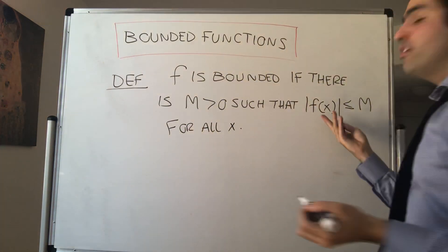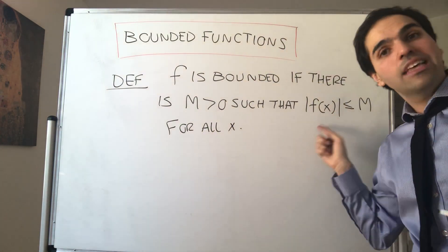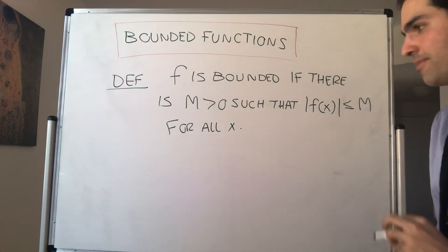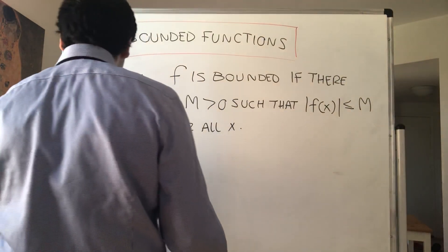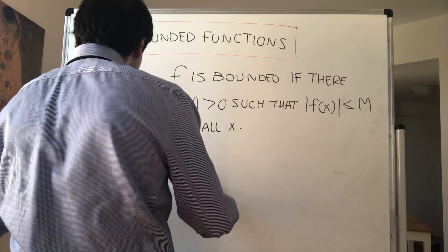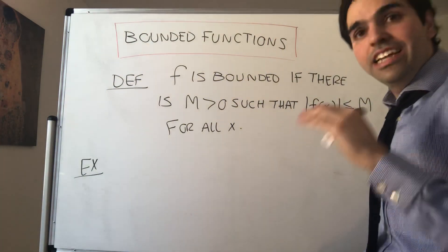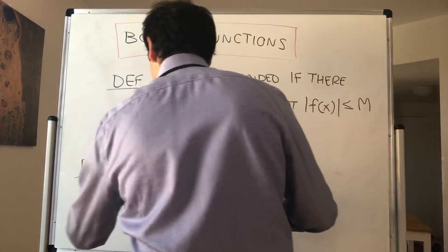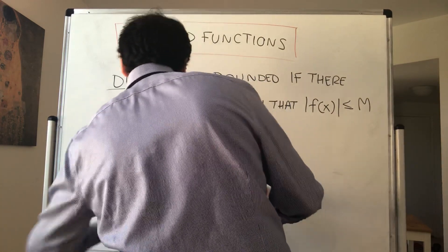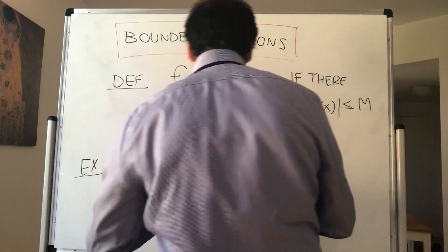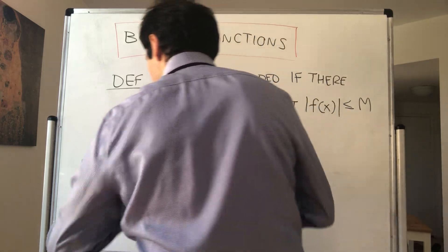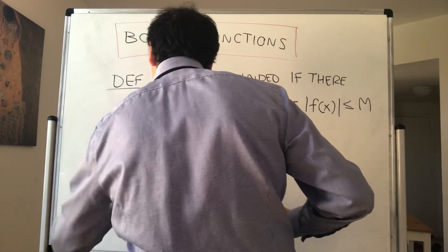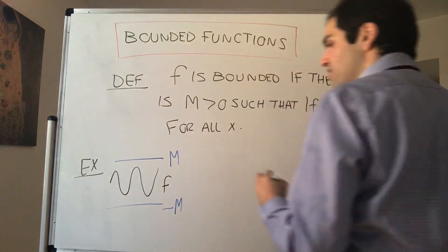Same as boundedness for sequences, except we replace it with f(x). And picture-wise, what does that mean? It just means that f is squeezed between M and minus M. So if this is M and minus M, then f is just trapped between the two. Think like sine of x that's between minus 1 and 1.